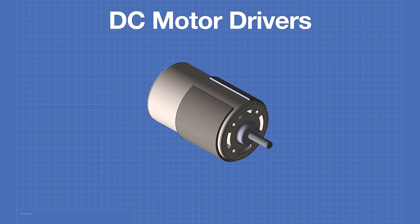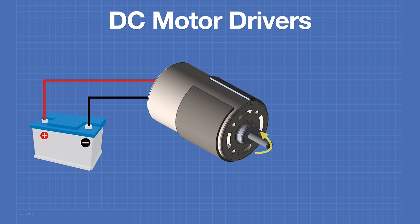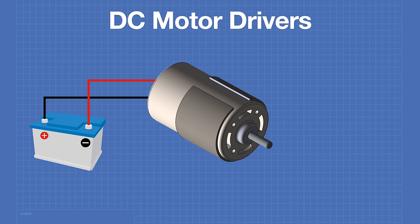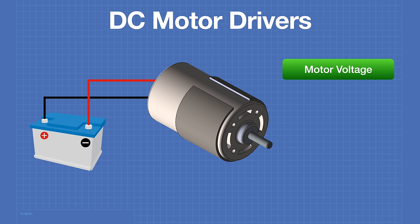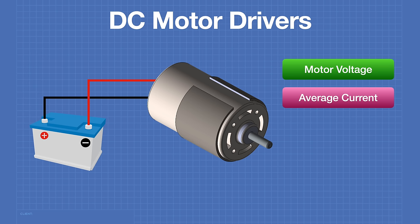The motor drivers we're working with today are for use with a DC motor, which is probably the simplest type of motor there is. Just apply voltage to the terminals and the shaft rotates in one direction; reversing the polarity causes it to rotate in the opposite direction. When choosing a DC motor driver, there are three motor specs to look at: the motor voltage, the average current under normal load, and the motor stall current — the current drawn if the shaft is seized. Your driver needs peak current capability to handle the stall condition.